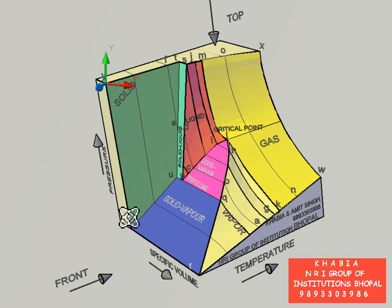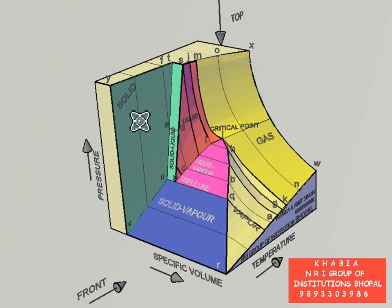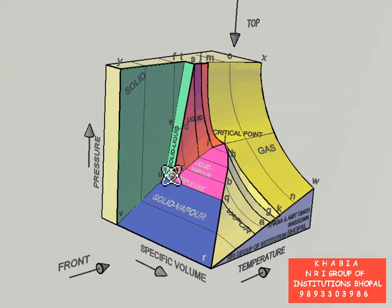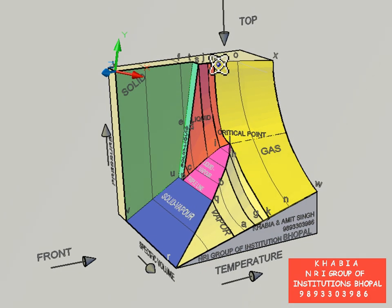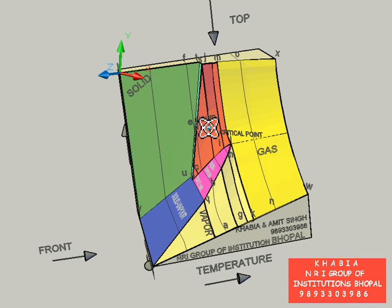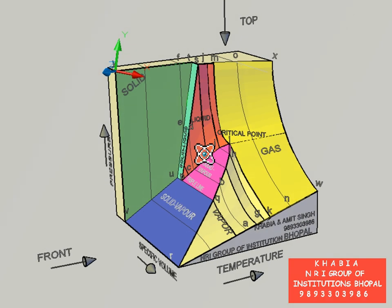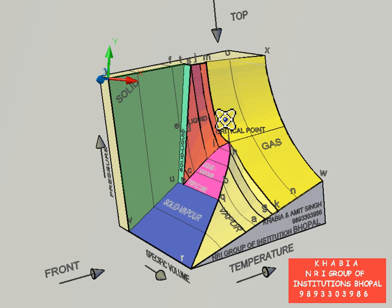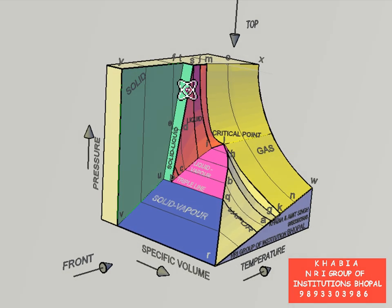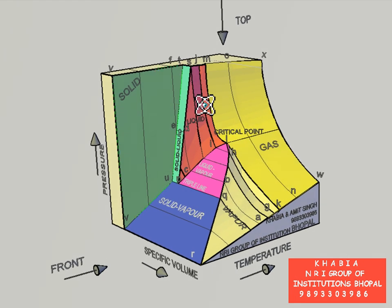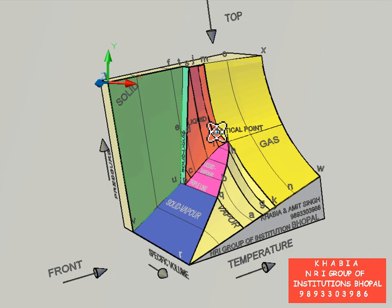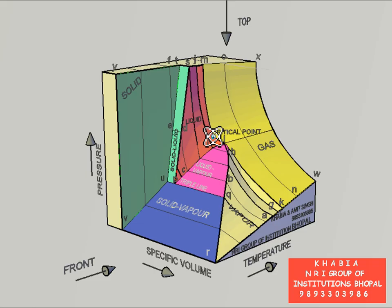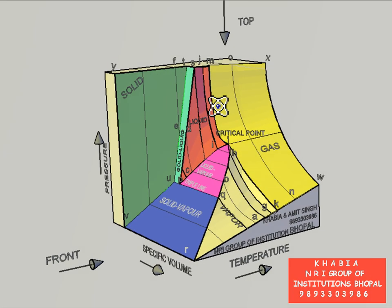The green colored surface TUVY indicates various possible equilibrium states of the pure substance in liquid state. At pressures higher than critical pressure, the differentiation between gas and liquid should not be taken very seriously, because at pressures more than critical pressure, liquid and vapor phases never co-exist in equilibrium, and we can call the pure substance simply a fluid.